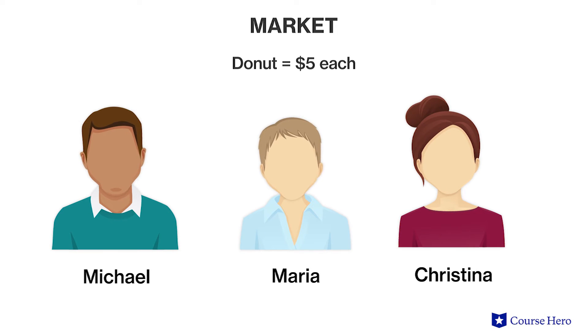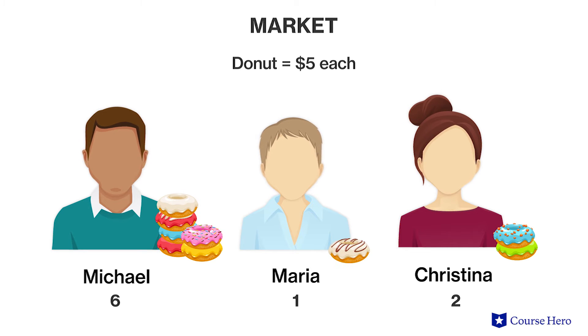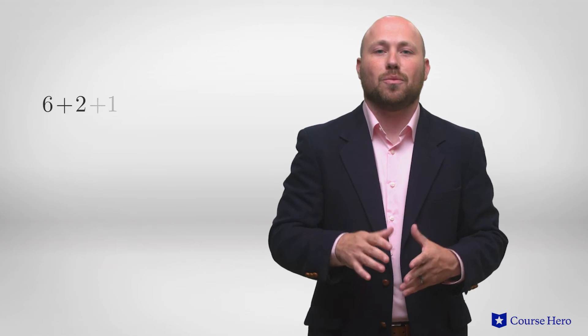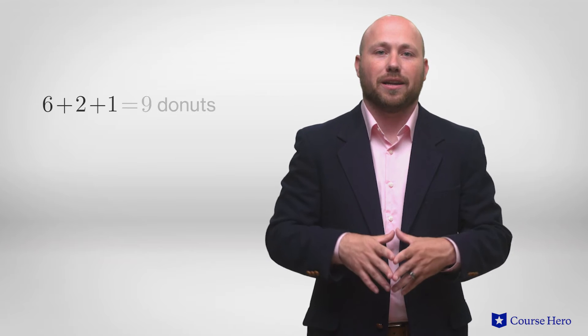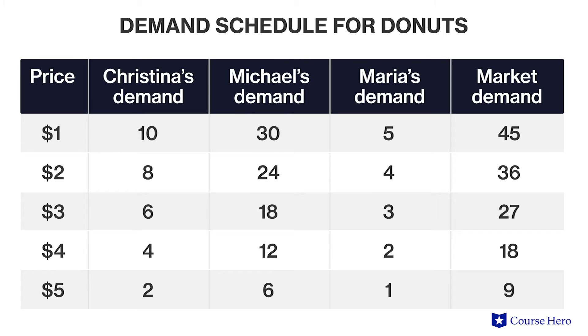But what if prices were $5 per donut? Christina would only buy two donuts, Michael will buy six, and Maria only one. Therefore, the quantity demanded at $5 is nine donuts — six plus two plus one. The demand schedule for donuts shows the quantity of donuts demanded at different prices for each consumer and the market overall.